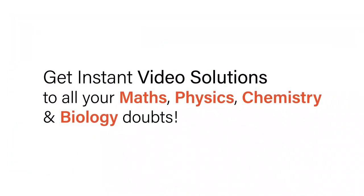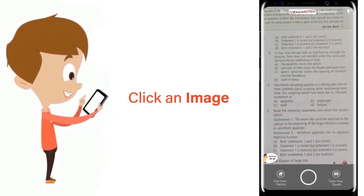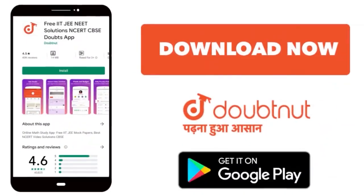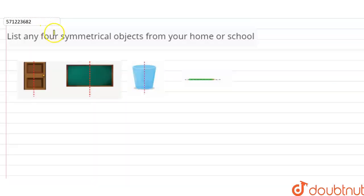With Doubtnet, get instant video solutions to all your maths, physics, chemistry, and biology doubts. Just click the image of the question, crop the question, and get instant video solution. Download Doubtnet app today. Students, our question is: list any four symmetrical objects from your home or school.